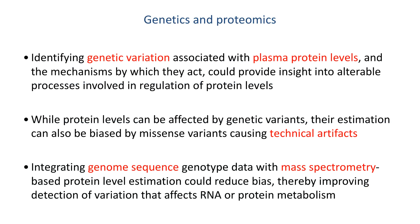Blood plasma is a source for many potential biomarkers which might provide novel drug targets if they are causally related to disease. Genetic variation that affects proteins can be used to assess the causal relationship between a particular biomarker and disease. Additionally, the molecular function of the variant can provide insight into processes important to the protein's abundance.